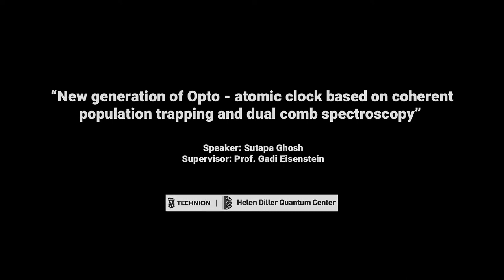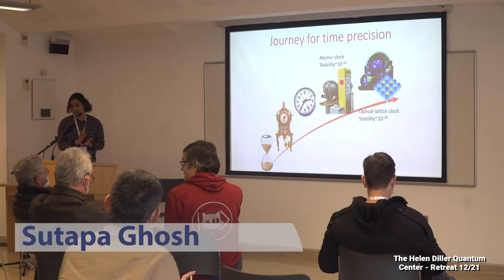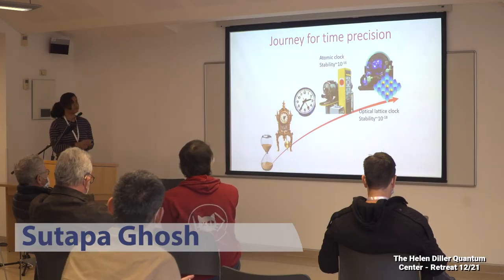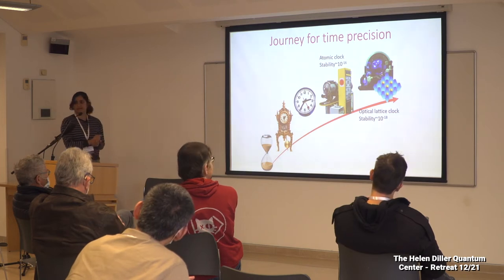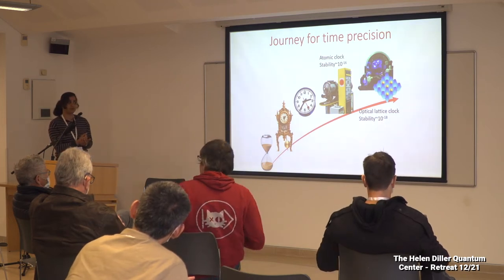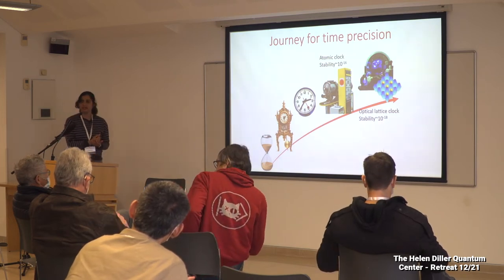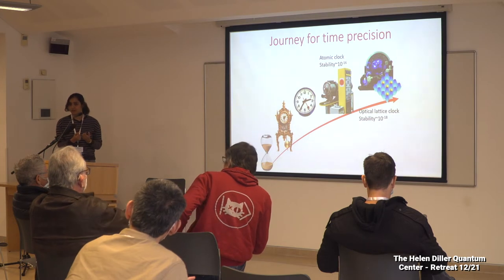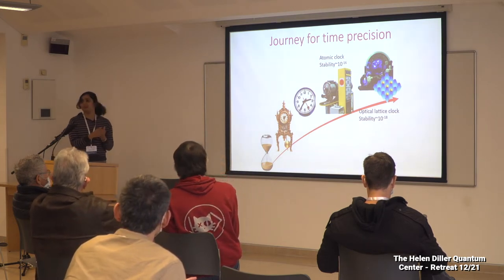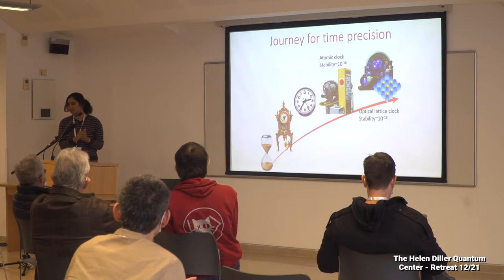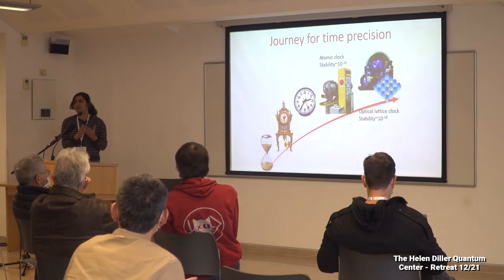My talk is about a different type of optical clock. The journey of time precision is very long — it starts from an hourglass to nowadays where we have optical lattice clocks with a stability of 10 to the power minus 18. What triggers this development and passion for precision is that by improving our time measurements we are actually improving many things.